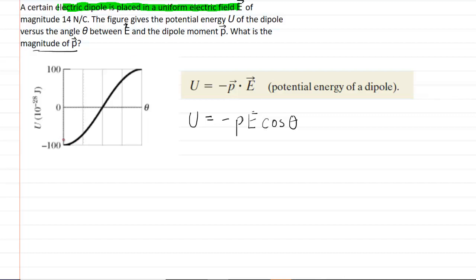And if we take a look at this point on the graph right over here, we can see that at that point, the angle between the electric field and the electric dipole is 0 degrees. We can also see that the electrical potential energy U is equal to negative 100, and then notice the scale of the y-axis here. You'd have to multiply that by 10 to the negative 28. And this will be in joules.